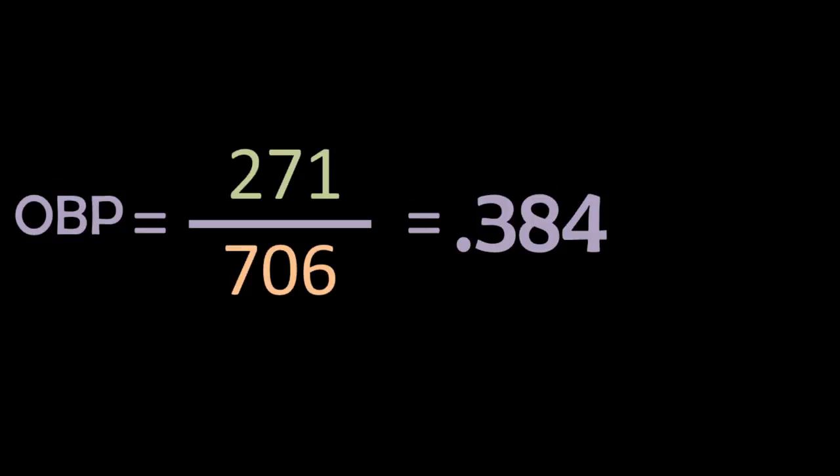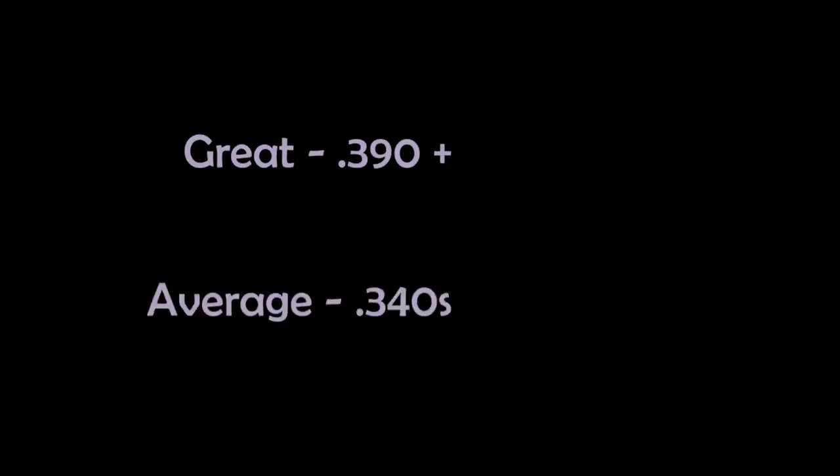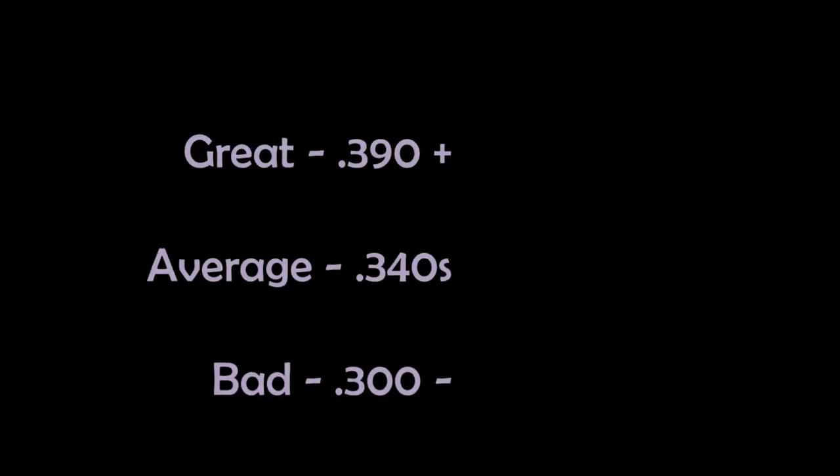So anywhere from the .380 to the .400 range and you're great. .320s to the .340s range, that's about average. But start falling below .300 and you're slipping. In 2012 the highest OBP in the league was a guy named Joey Votto who came in at .474. But he was actually way ahead of everyone else. And the guy in second place finished at about .416.